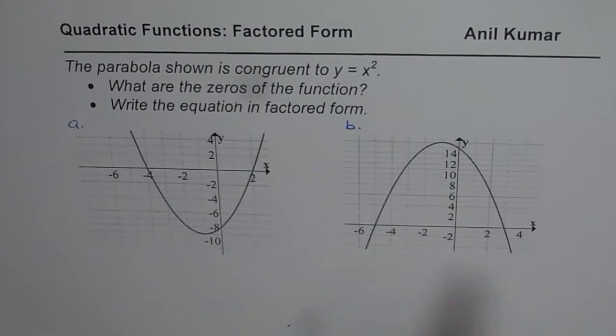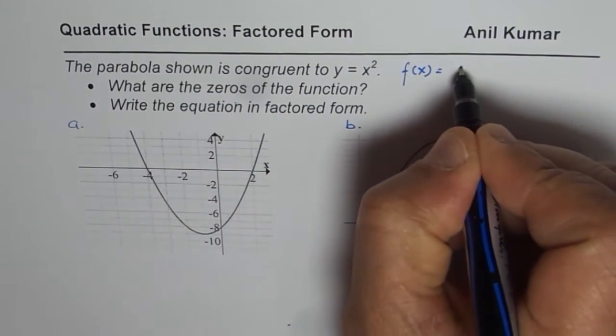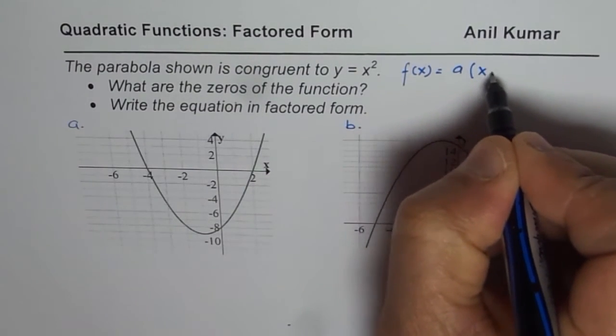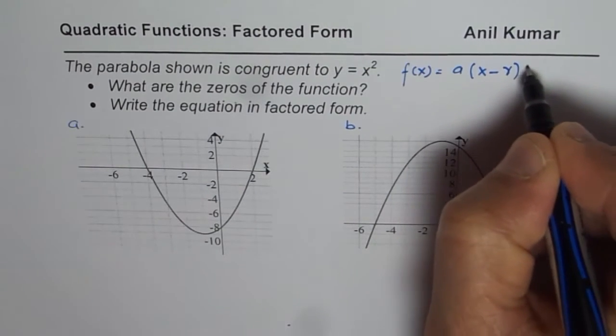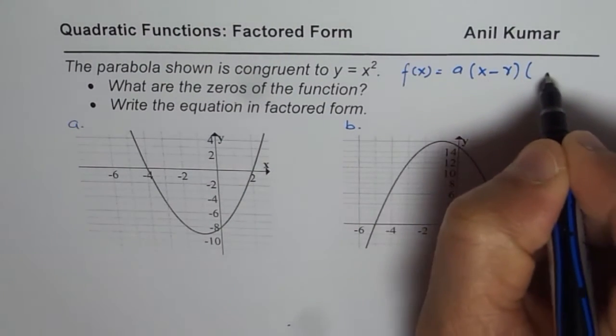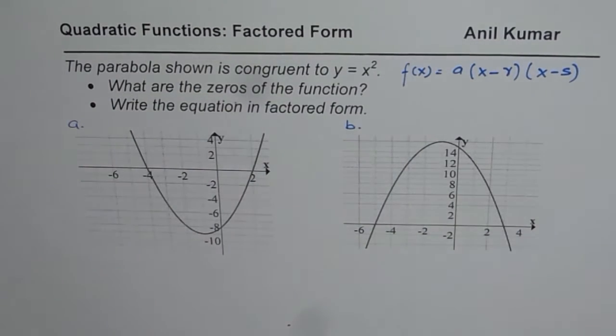Now as you remember, when we say factored form, we are looking for an equation in the form of f of x equals A times x minus... Sometimes we use P or Q, sometimes we use R and S. Anything you could write, but these two are the values of x intercepts, x minus S. So it all depends which book you use, what format you use.